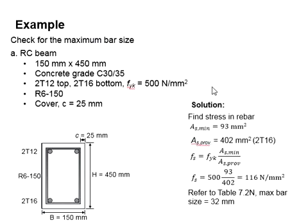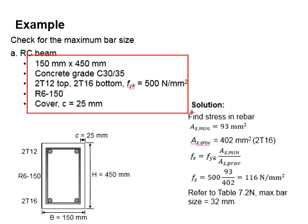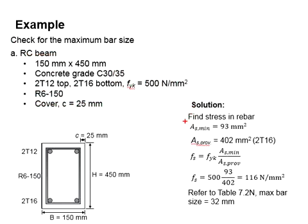This is the solution to determine the maximum bar size. Since we have done this example previously to determine the AS minimum and AS provided, you can simply adopt the values which we obtained from the previous example. The AS minimum is equal to 93 and AS provided equal to 402.